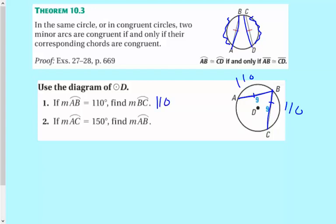And then scenario two, if the measure of AC is 150, then find the measure of AB. So this is 150 here. Since these two arcs are the same, we're going to call them X and X.